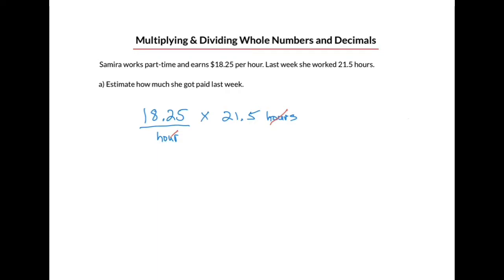Now that we've determined we have to multiply the numbers, let's clean up the workspace to remove the units. Okay, now we can start to estimate. And there are a couple of ways we can do this. Let's say we wanted to estimate to the nearest ones. So we find the ones digit, the eight, we look to the digit to the right. If it's bigger than or equal to five, we bump up the number. In this case, it isn't. So we'll leave her hourly rate as $18 per hour. That's our estimate. Now we'll estimate the number of hours she worked to the nearest one. And using the same technique, our estimate is 22 hours.